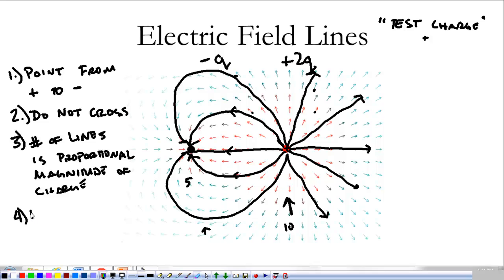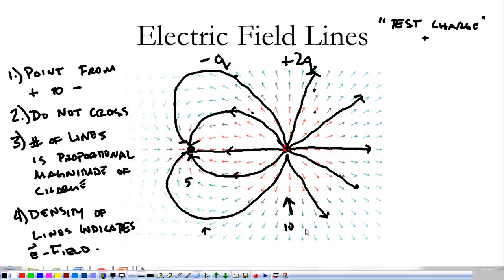The last thing to remember is that the density of lines indicates the strength of the electric field. In between two charges where there are a lot of lines close together, the field is pretty strong, but farther away where lines are sparse, the electric field is not very strong. We're going to spend time on Friday with a worksheet drawing electric field lines, to give you some practice looking at and interpreting them.